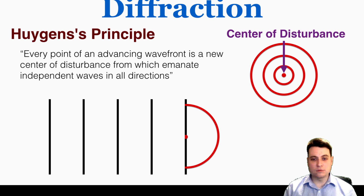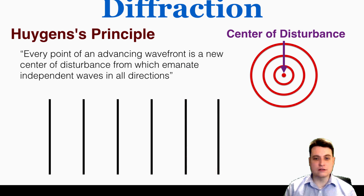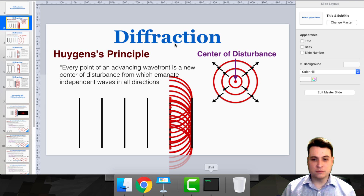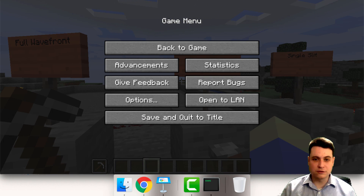If I line up all the points like this, you can see that the area of overlap that all the waves share is right here. So this is where the next line of the wavefront occurs, and you can see that that's true. But this can be a little abstract, and Minecraft can actually help us with this because the Minecraft water actually obeys Huygens principle.